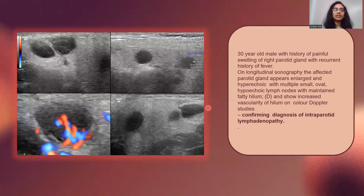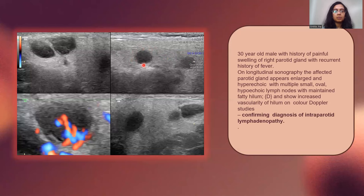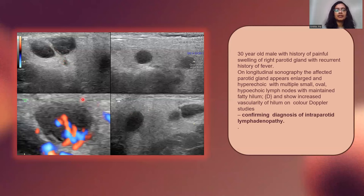Here we have a 30-year-old male patient with a history of painful swelling of the right parotid gland with recurrent history of fever. On ultrasound, the affected parotid gland appeared hyperechoic and enlarged, showing multiple small hyperechoic circular-oval lesions with a fatty hilum within. It appeared maintained and showed vascularity on color Doppler studies. This was indicative of intraparotid lymphadenopathy.